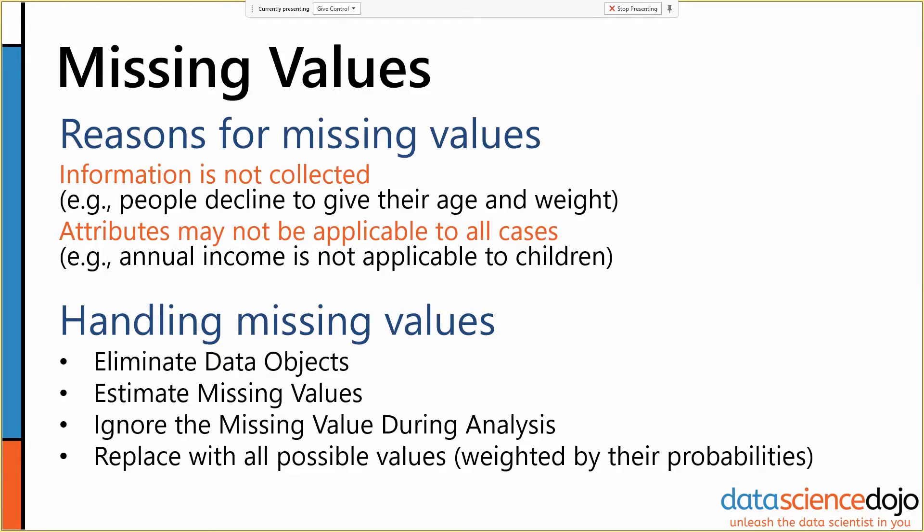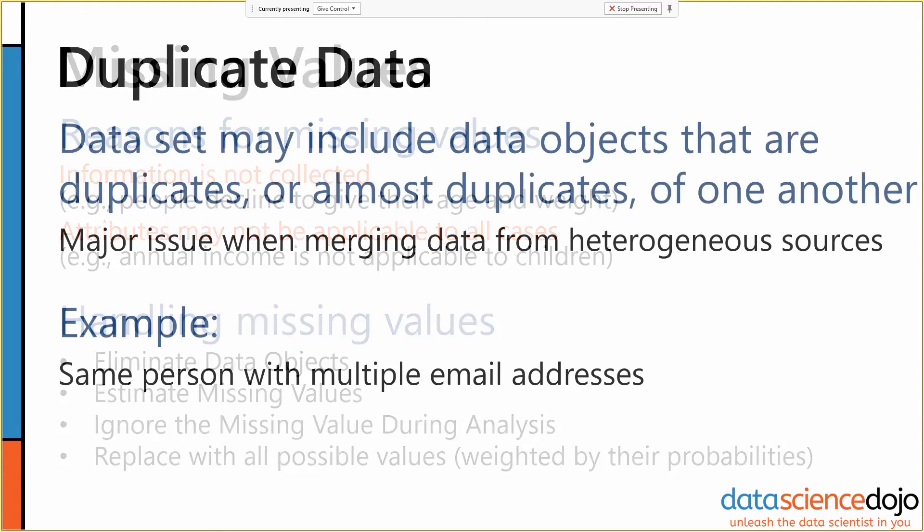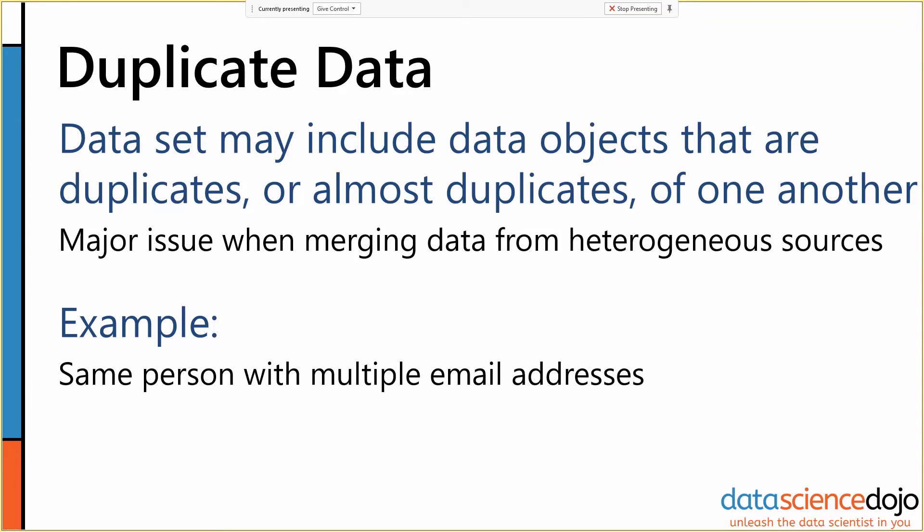The third category, alongside missing values, noise, and outliers, is duplicate data. This is particularly a problem when we're merging data from heterogeneous sources.